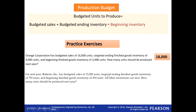Another example for next year: Roberto Incorporation has budgeted sales of 15,000 units. Targeted ending finished goods inventory is 750 units. Beginning inventory is 0. So how many units should be produced next year? Using the same method: 15,000 + 750 − 0 = 15,300 units. We must produce 15,300 units. This is our production budget for next year. Remember, this is number of units, not an amount in dollars.